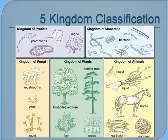As time progressed, biologists started using a five-kingdom classification method instead. The five kingdoms they used were Protista, Monera, Fungi, Plantae, and Animalia, which is shown in this diagram.